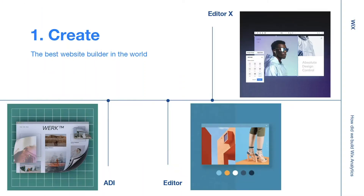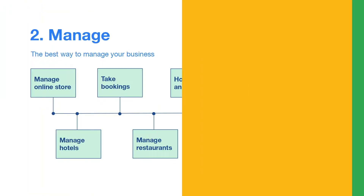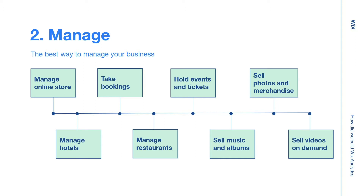In terms of create, we have the best website builder in the world. We provide three different editors to fit the different needs of our users. For our basic users, we have the ADI, which stands for Artificial Design Intelligence — they can simply answer a few questions and we automatically create a site for them. We also have the editor which helps advanced users such as designers and developers to create their own website using the Wix code platform. And recently we launched Editor X to fit the needs of our web designers community.